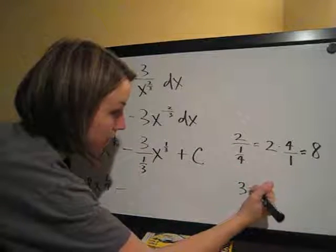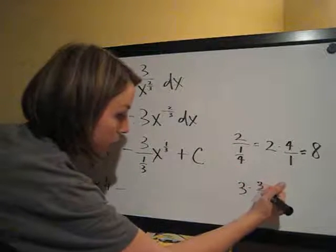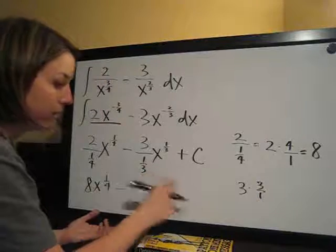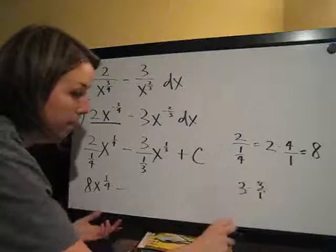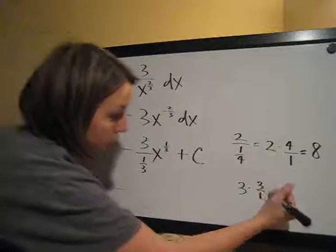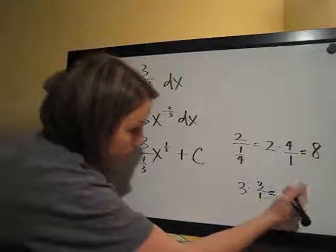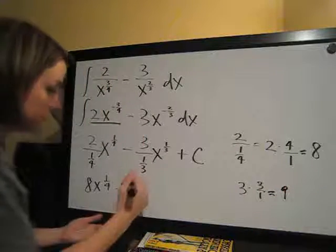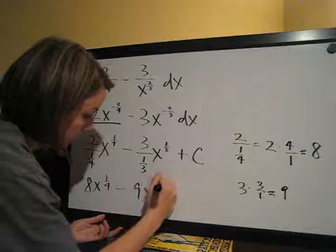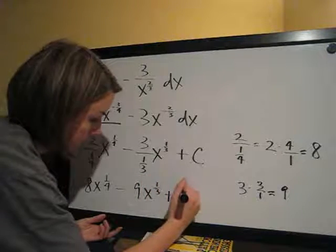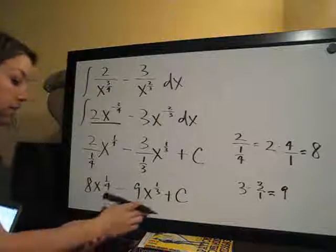It's the same as 3 times 3 over 1. Instead of dividing by the fraction, we multiply and flip over the fraction. 3 times 3 over 1 is 9. So minus 9x to the 1 third plus c. That's our answer there.